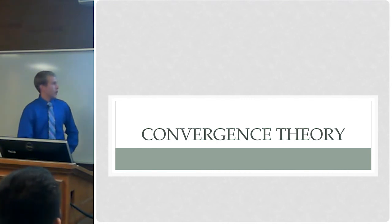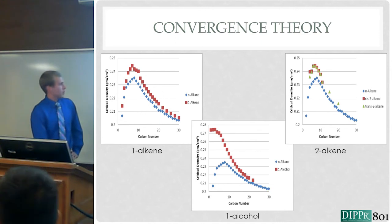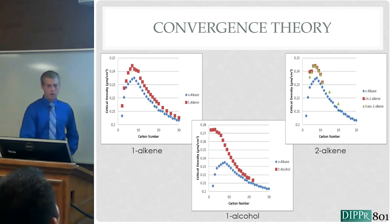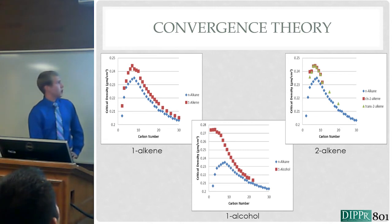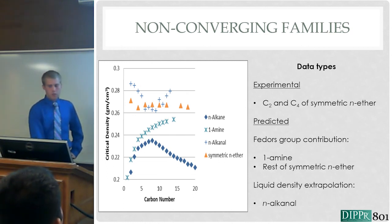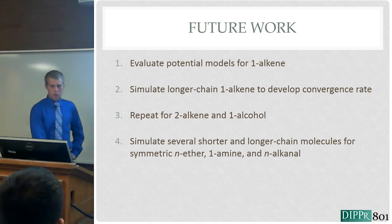Regarding the convergence theory: the graph shows three families that DIPPR has converging to the N-alkane family. The largest existing simulations in the literature are only for C8 for all these families, so I'll be simulating much larger compounds to verify this convergence. For the three families that don't converge, there are very sparse simulations available. My future work will move past the N-alkane family to test the convergence theory for those other six families.